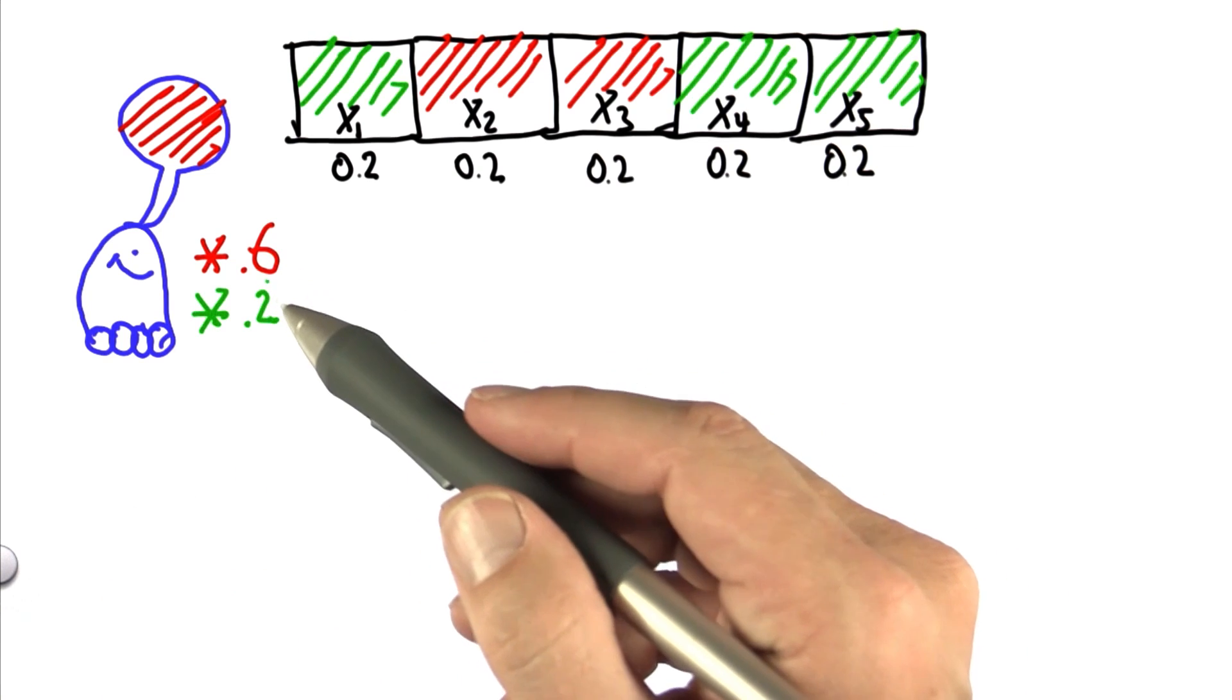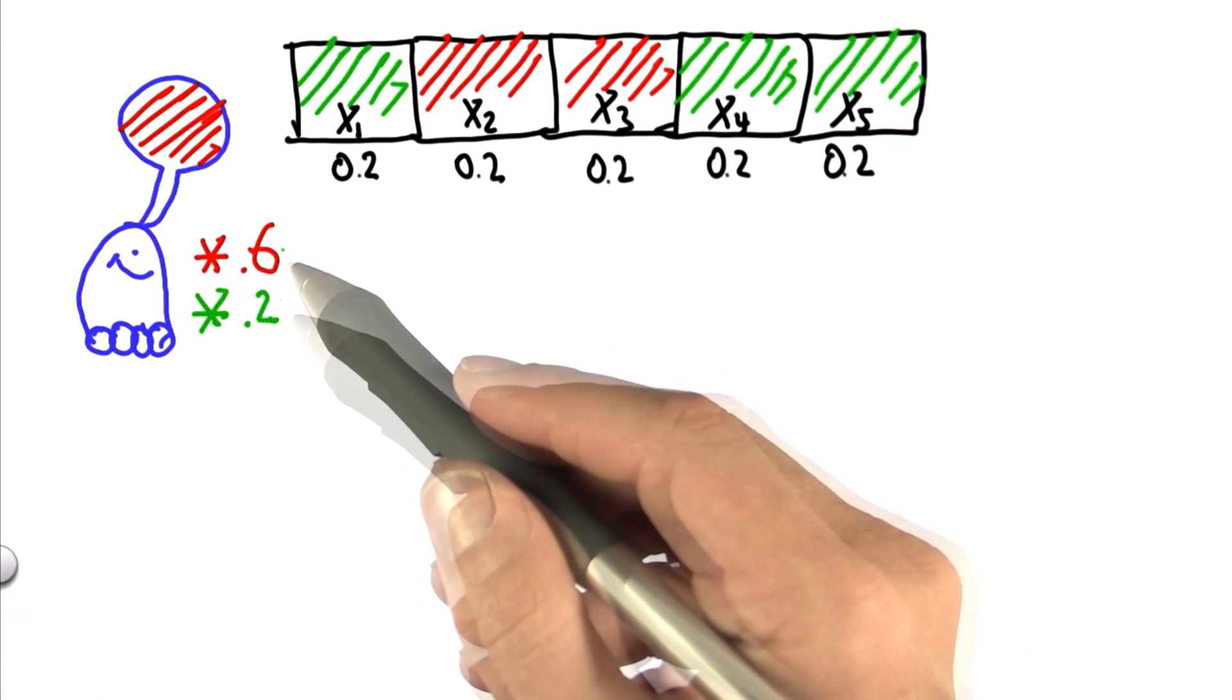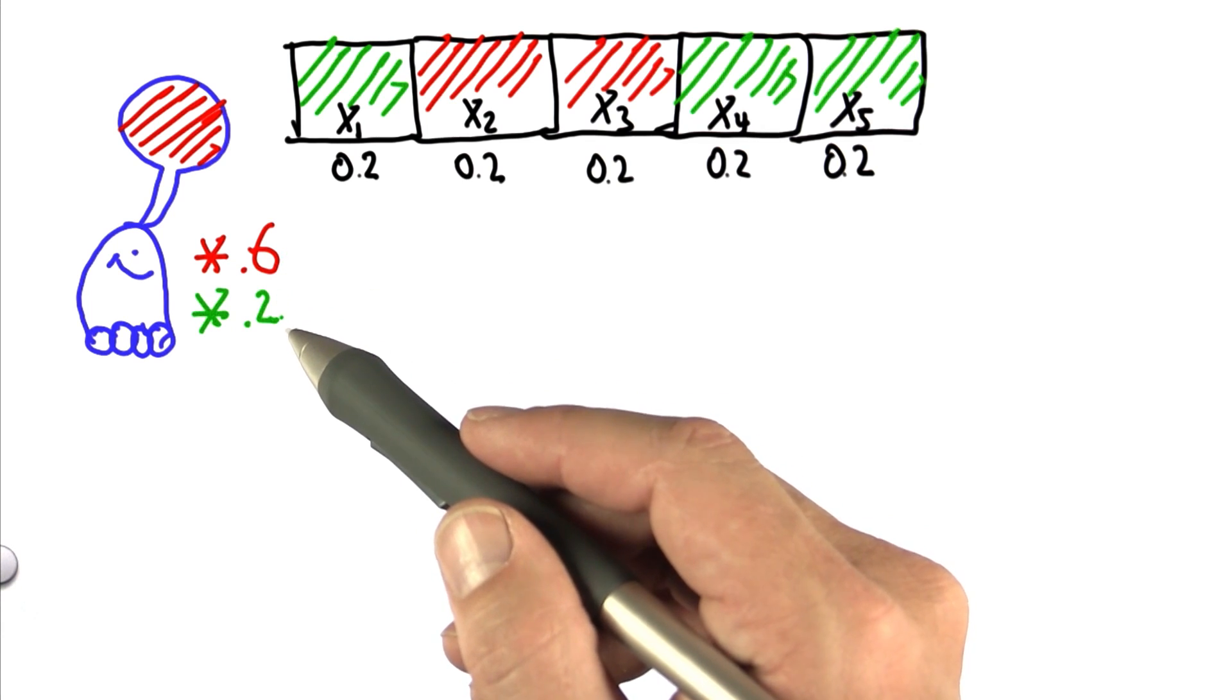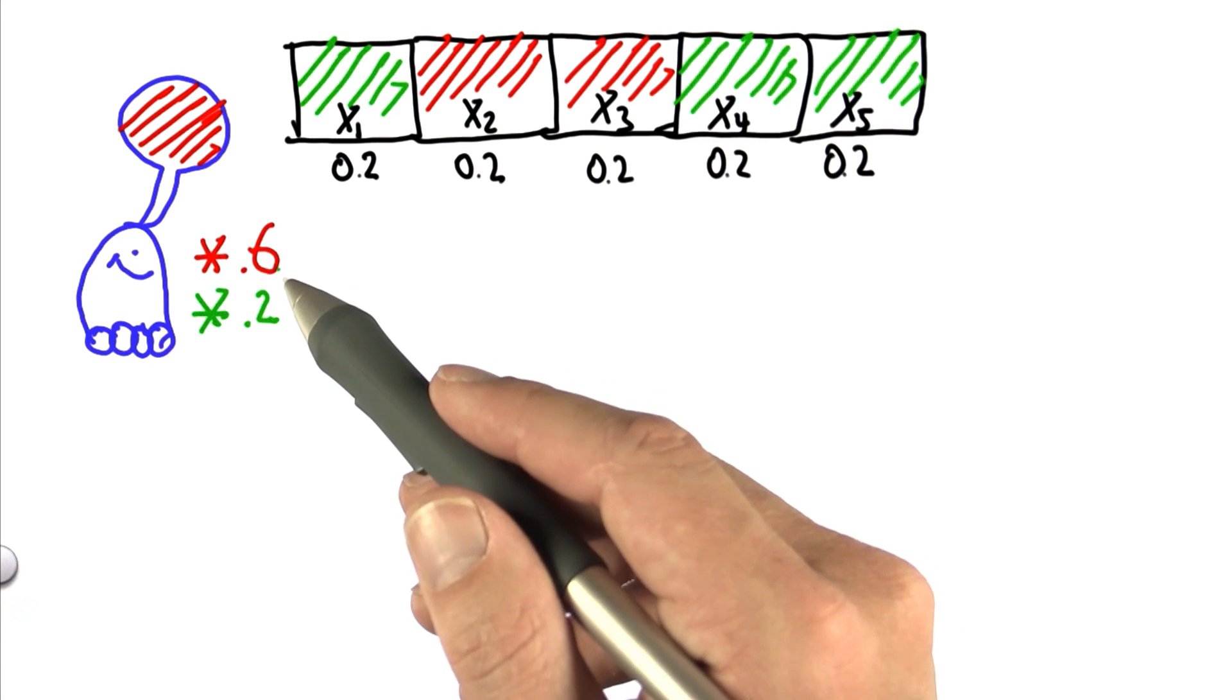If we look at the ratio of those, then it seems about three times as likely to be in a red cell than it is to be in a green cell because 0.6 is three times larger than 0.2.